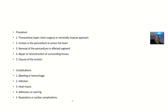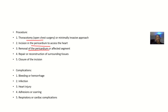For the procedure: you access the heart through the chest wall, either by thoracotomy — opening the chest wall — or by a minimally invasive approach using scopes. You incise into the pericardium to access the heart, then remove all or the affected parts of the pericardium, and then repair and reconstruct the surrounding tissues.